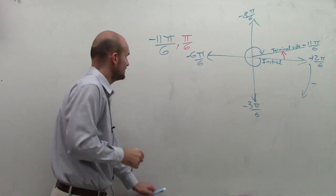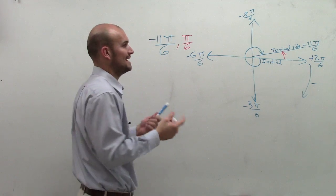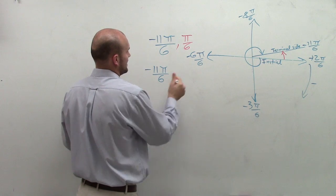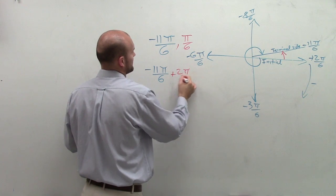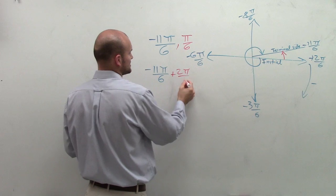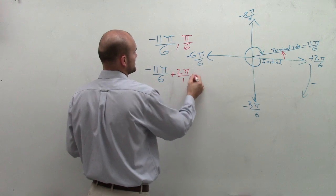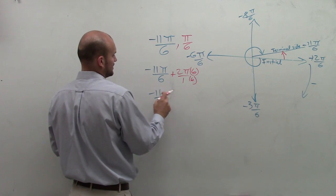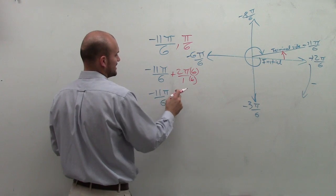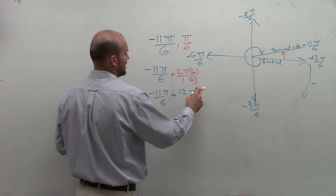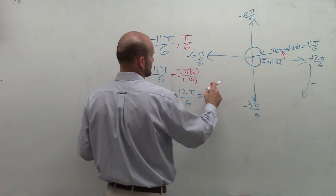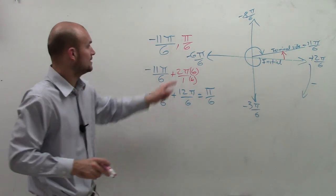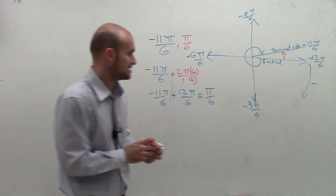So the way we can do that is just take your terminal side and add a positive 2 pi. So take negative 11 pi over 6 and add 2 pi. Well, when I change this to a denominator of 6 over 6, or 12 over 6, I get negative 11 pi over 6 plus 12 pi over 6, which gives me 1 pi, or just pi over 6. So that's how I did my work right there. So you can see I get my pi over 6, which is this answer.